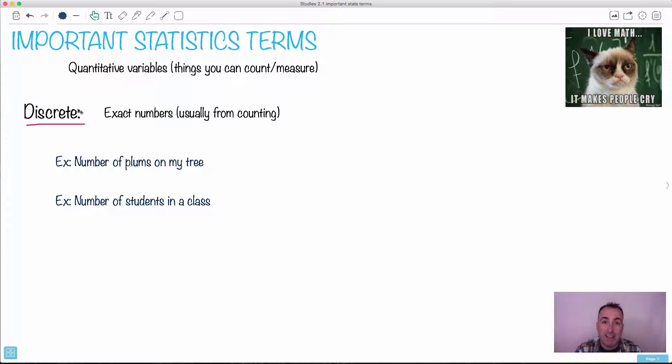For example there can be discrete variables. These are things that are like exact numbers. Those usually come from counting, for example the number of plums on my tree. We actually have a plum tree at home for example. If you're counting those, they come in countable amounts right, there might be zero or one or two or dot dot dot. Those are discrete values. In other words you can't get half of something. Same with like numbers of students in a class. You can have zero or one or two or whatever. You can't get a half student. Well you can I guess it's messy. So this is discrete variables, things that come in countable amounts.